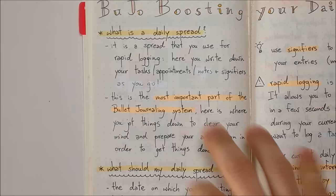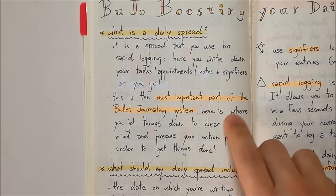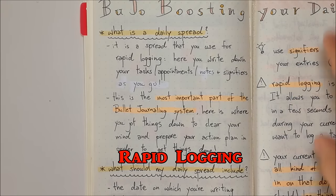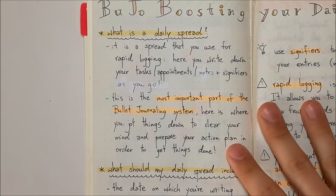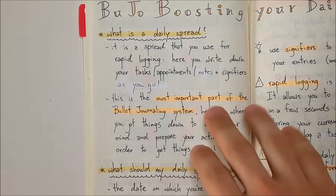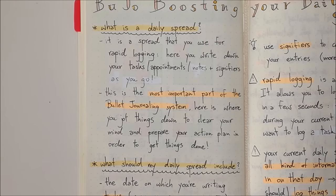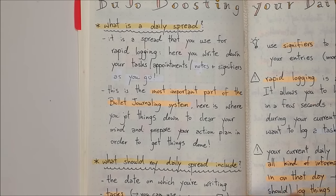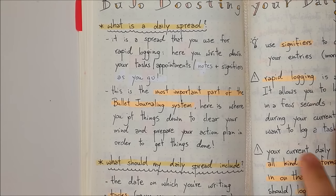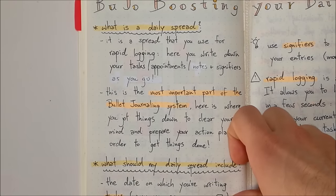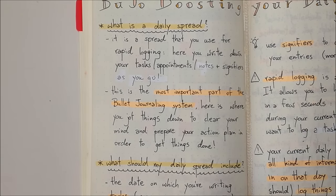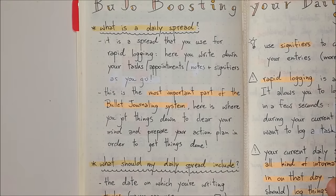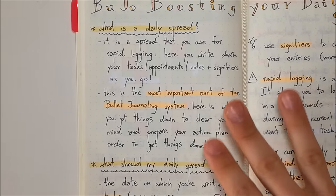So first of all, what is a daily spread? The daily spread is the spread that you use for rapid logging. In your daily spread, you want to write down your tasks, appointments, and notes plus signifiers as you go. This is the most important part of the bullet journaling system because that's where you use the bullets. Rapid logging in your daily spread is something that all of you can do with only a journal and a pen. That's why this system is powerful.